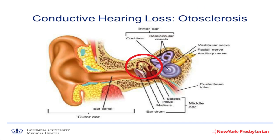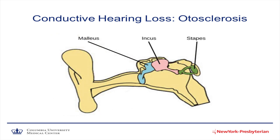Another cause of conductive hearing loss is called otosclerosis. What this simply means is when we look at those three tiny little ear bones, that last tiny little ear bone called the stapes — instead of vibrating with all the rest of the ear bones when sound waves hit, it does not move. It doesn't vibrate. It is stuck, and sound does not transmit and stops right there. And just to get a bigger picture, that is the tiny little ear bone that gets stuck.